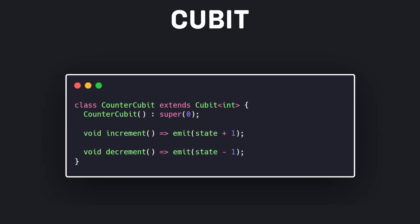To make our work easier, instead of using bloc, we can use cubit. In cubit, instead of defining classes for events and then registering them, we can define methods and use those methods. As you can see, we defined two methods named increment and decrement in the cubit class, and we can call these two methods whenever we want.